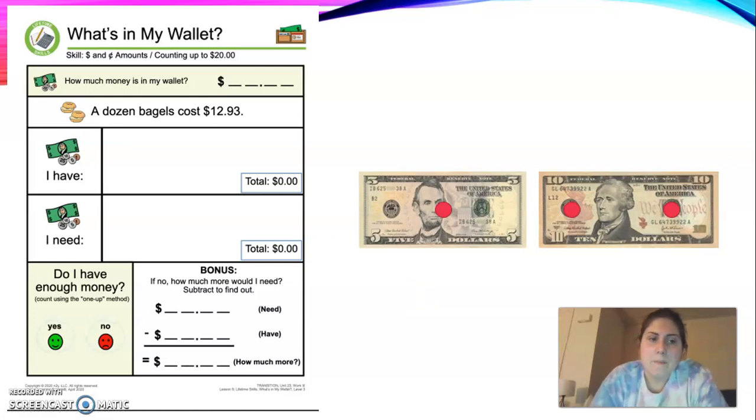All righty friends. Your pages are going to start to look a little different. The only thing different is that after you fill out all of the same parts, you count your money first, put it up here and in your I have spot. Then you're going to read your sentence for what you're buying. So this says a dozen bagels cost $12.93. Put that in the box and compare them. If your answer is no, I don't have enough money.